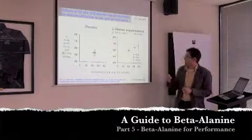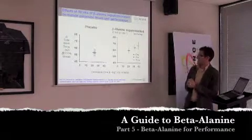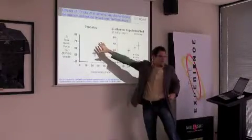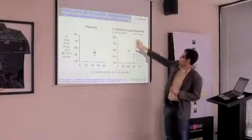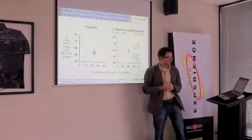What about performance? The very first performance study was in 2007 and I'll step you through what they did here. They had two groups, a placebo group that got nothing and a group that got beta-alanine of four to six grams per day.